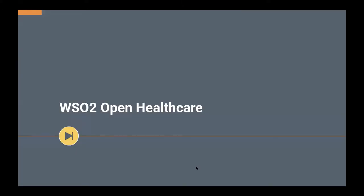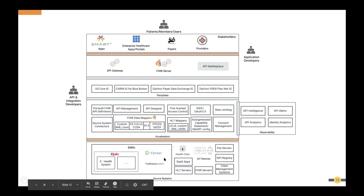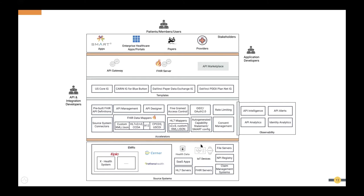Let's quickly look into the WSO2 Open Healthcare solution. The reference architecture shows that as a healthcare organization, you would have different source systems — EMRs, EHRs like Epic, Cerner, Athena Health — as well as traditional custom databases, IoT devices, wearable devices, file servers, SaaS applications, FHIR servers, claim management systems, and many other systems. You may also want to connect to different hospital systems and different Epic versions deployed across hospital systems.